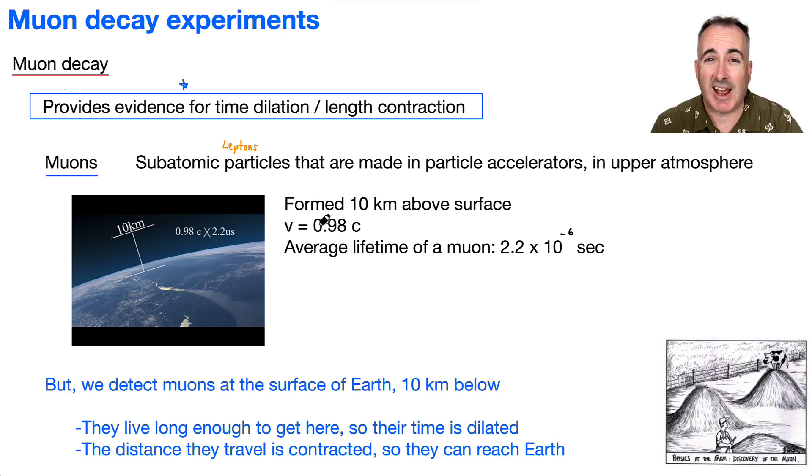And their speed is about 98% the speed of light, so pretty fast. And the average lifetime of a muon, this is really important here, is 2.2 times 10 to the minus 6 seconds.